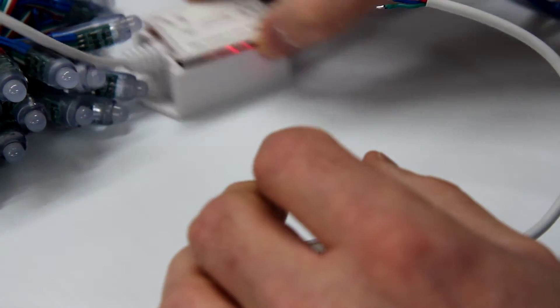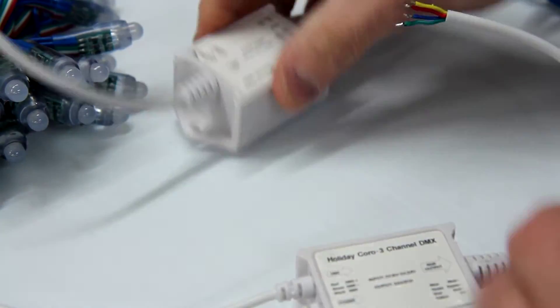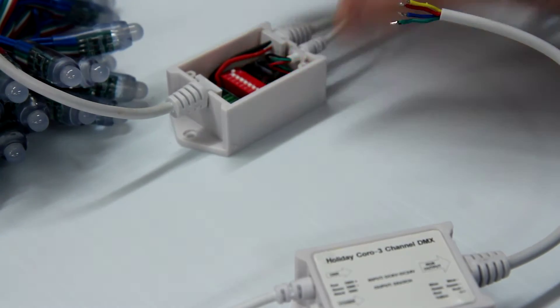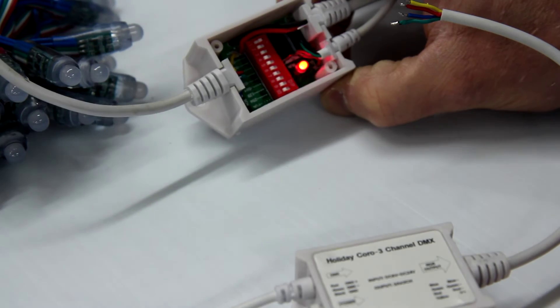There is a cover that is removable by simply taking out these two screws on the corners and removing the cover. Once you've removed the cover, you can access the dip switches, allowing you to easily set the address on this controller.